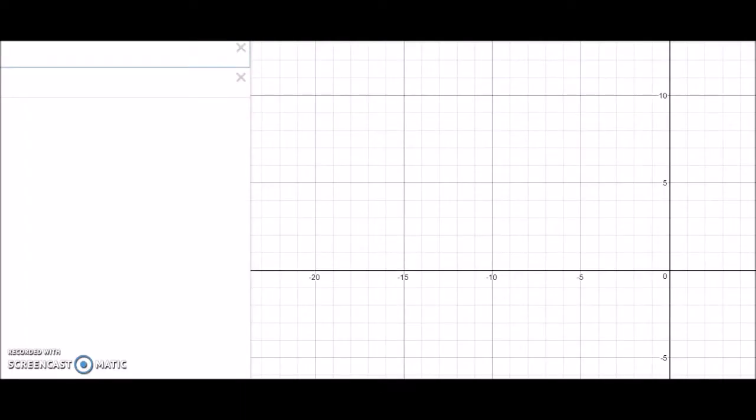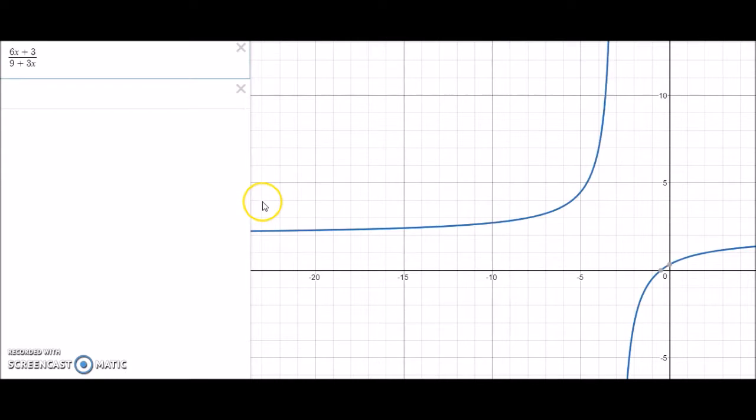Using our handy tool, Desmos, we can quickly plot our function, plot what y equals, and find the intersection points super fast. So we know that x equals negative 4.